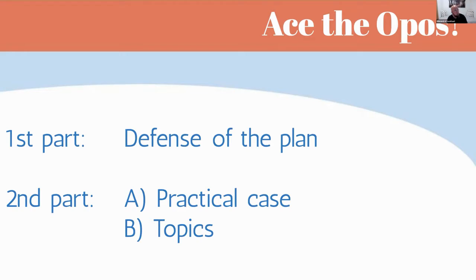This might change — the order might change, the practical case might disappear, but we don't know for sure. The first part was the defense of the plan. You have to plan a whole year at one of the primary or secondary levels. This presentation is more oriented towards secondary because the course launching next week is for secondary, but we're also planning a course for primary. The system is the same, so you can follow equally. The questions and answers are the same for both. I also train the OPOs for primary, so I will answer those questions too.